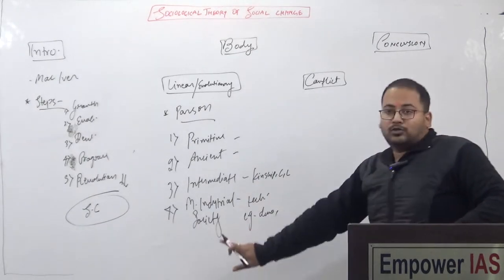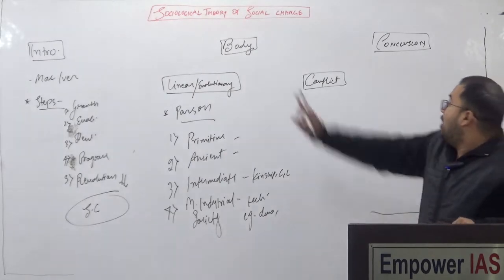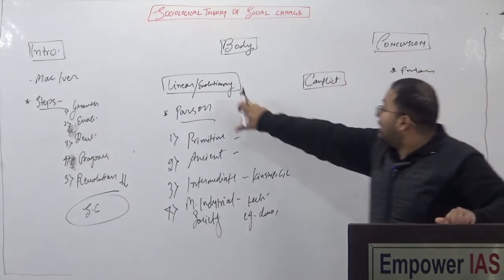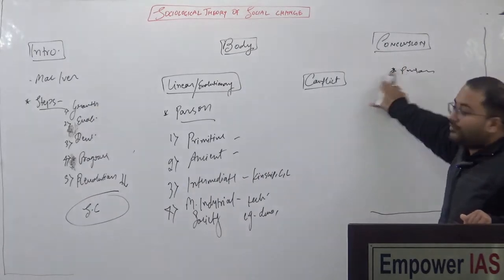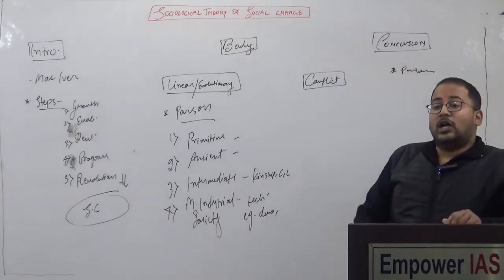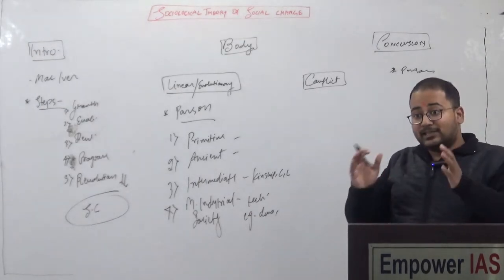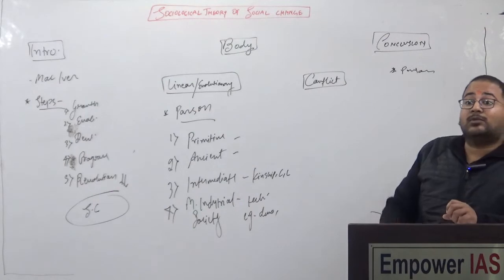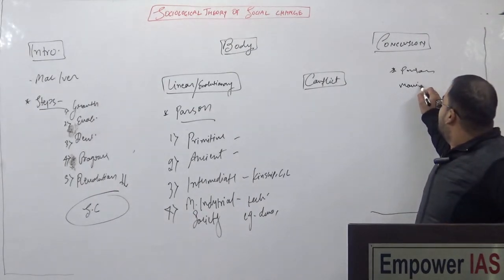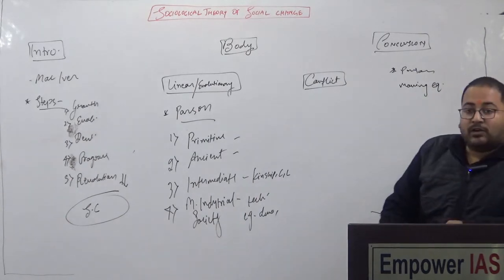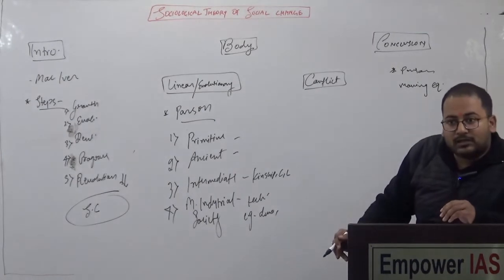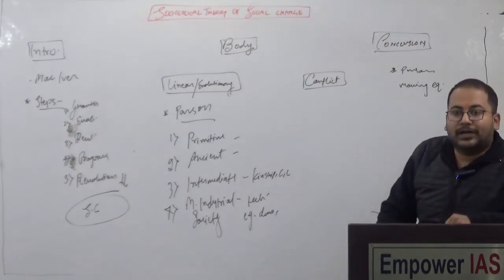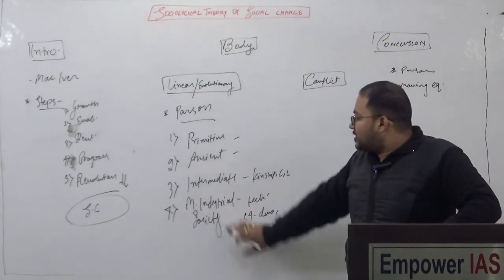Society moves from one stage to another stage. What does Parsons say in his conclusion? He said society is never static — it is always changing and tries to maintain its equilibrium. That is the reason he gave the concept of moving equilibrium, because society changes itself according to the needs of the individuals without changing the existing social order of the society. So here is the concept of moving equilibrium — society moves from one stage to another stage.